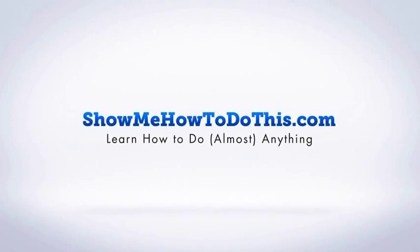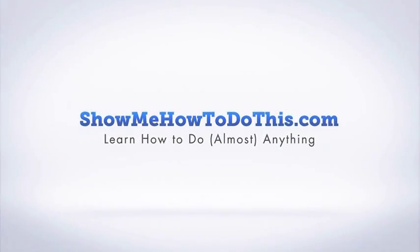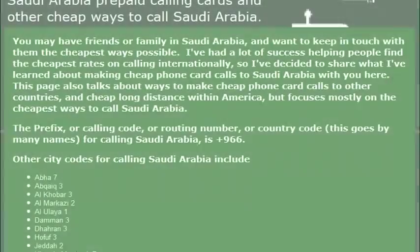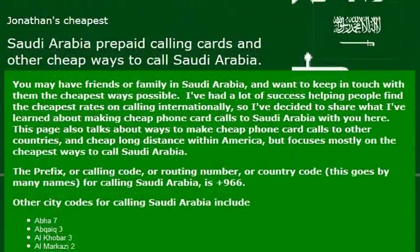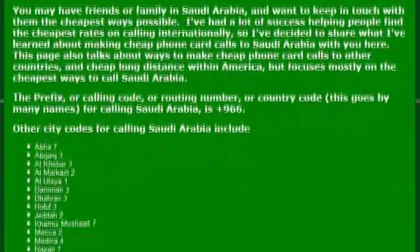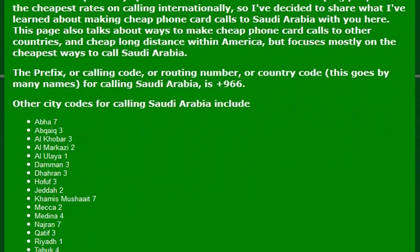Saudi Arabia seems like it would be such a different place from the United States, and I think it would be a fascinating place to go and visit, just to experience what that's like. And when I want to go, I'm probably going to need to make some phone calls to make some travel arrangements, and the country code to actually reach Saudi Arabia is 966.